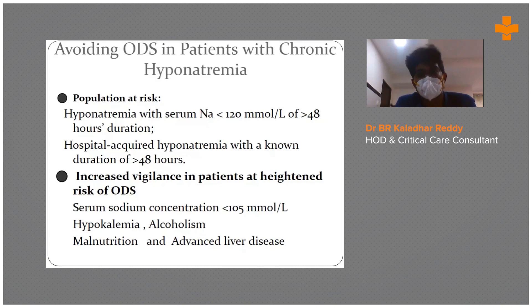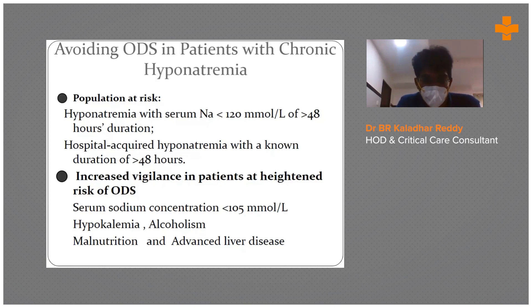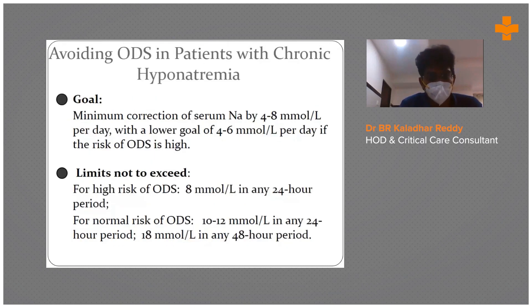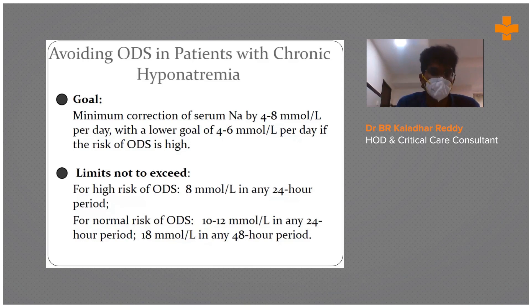Populations at risk for ODS include patients with hyponatremia with serum sodium less than 120 mEq/L for more than 48 hours duration, or hospital-acquired hyponatremia of known duration more than 48 hours. Increased vigilance is needed in patients with serum sodium less than 115, hypokalemia, alcoholism, malnutrition, and advanced liver disease, as ODS is worse in those with pre-existing brain pathology. Serum correction should be only 4–8 mmol/L/day, with a lower goal of 4–6 mmol/L/day if ODS risk is high, not exceeding 8 mmol/L/day. For normal risk, the limit is 10–12 mmol/L/day.